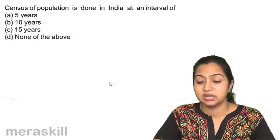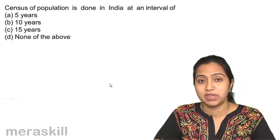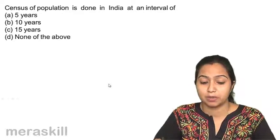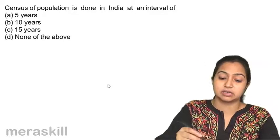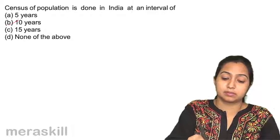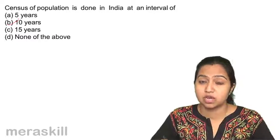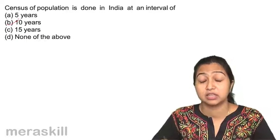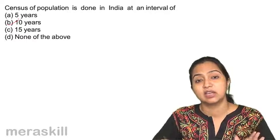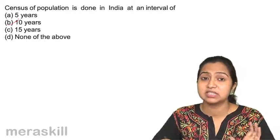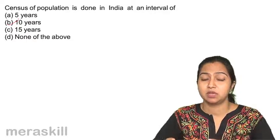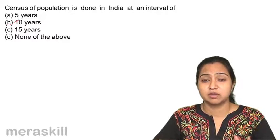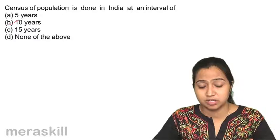Census of population is done in India at an interval of. We had taken up when we had started the topic. Census of population. It is done in a difference of ten years. It was started by Britishers in the year 1871. And since then on, every ten years, census is done. And what is census? Census is composition of population. Then what is the sex ratio? How many males? How many females? All these things. Gender based, education, literacy rate. All these things are calculated in census.